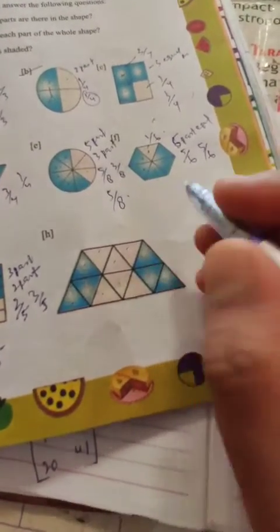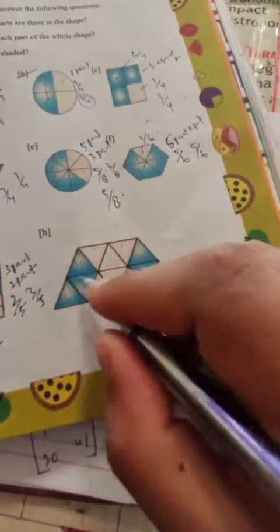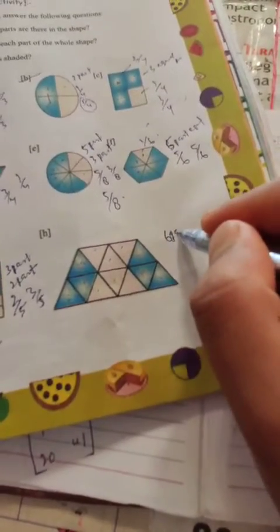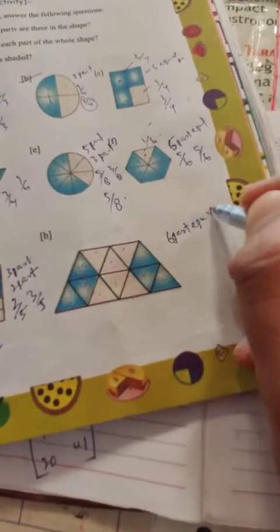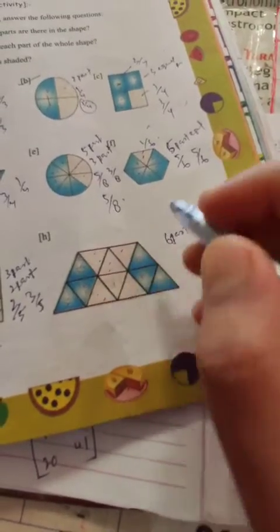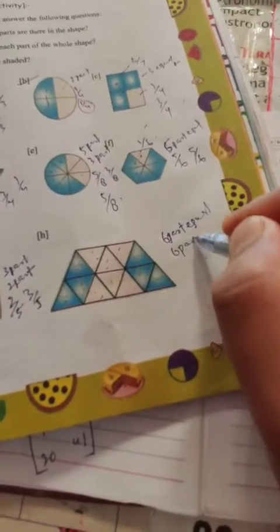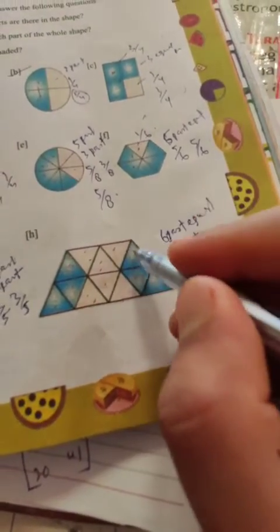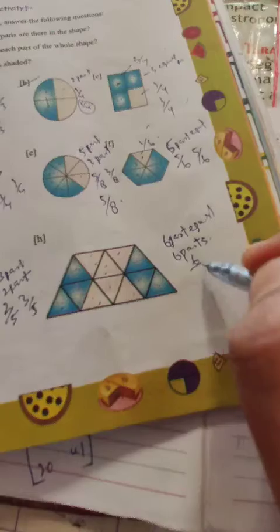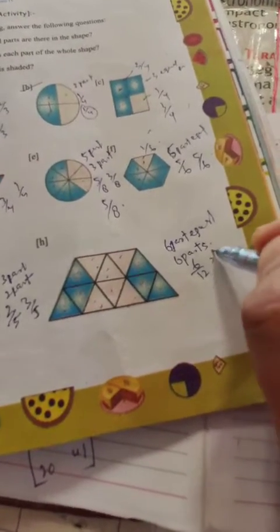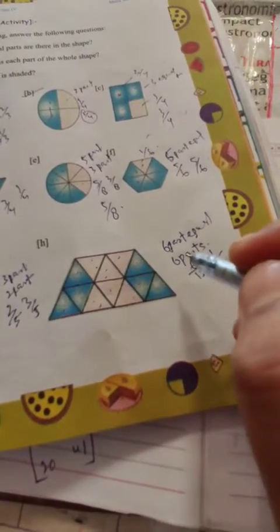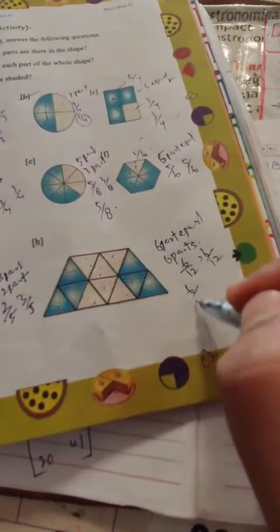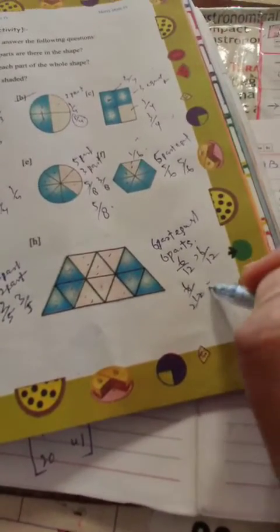The parts are equal. What fraction is each part of the whole? The solution is 6 by 21. The fraction is 6 by 21 or 1 by 2.